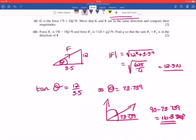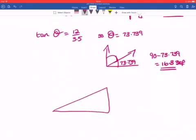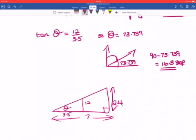G is the force 7i plus 24j. Show that G and F are in the same direction and compare their magnitudes. So really, you should just find that the angle is the same. We've got 7i and 24j. And before, we had 3.5 and 12. Do we even need to think about doing anything else? Because it's just a scalar multiple, isn't it? The theta must be exactly the same. So they are similar triangles.